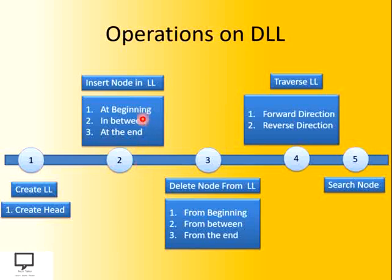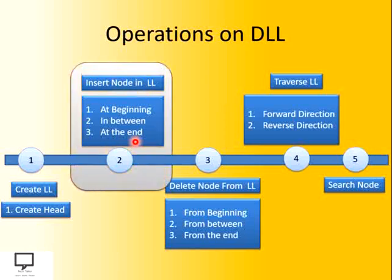We can insert a node at three different positions: at the beginning of the list, that means the first node of a linked list; or at any in-between position; and at the end of the list also we can insert a node. All three positions — how to insert a node — that I am going to explain you in this video session. So now let's start with the insertion of node in doubly linked list.